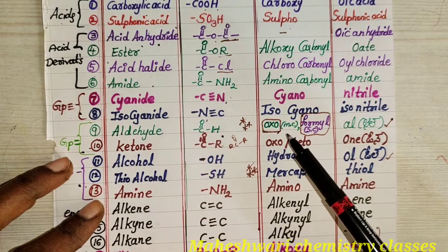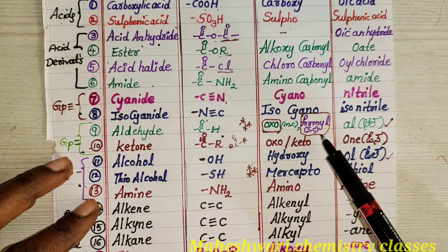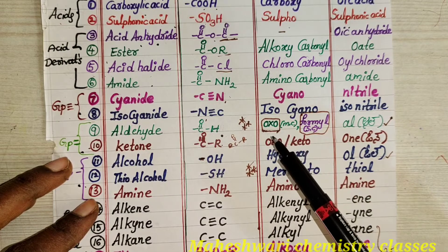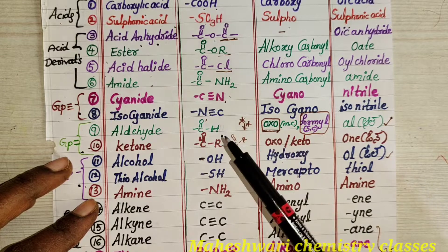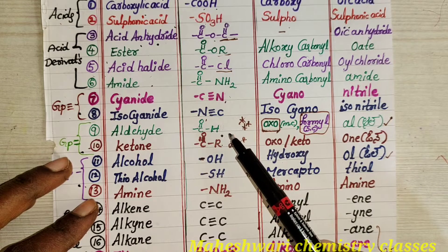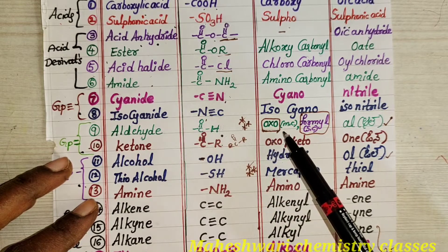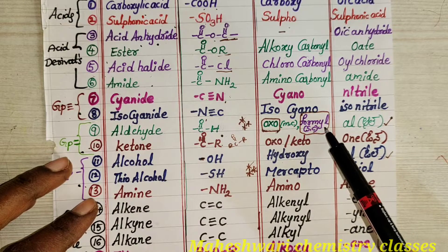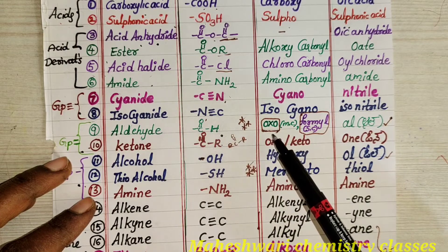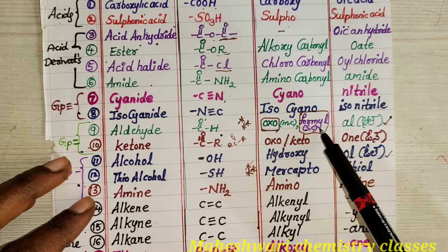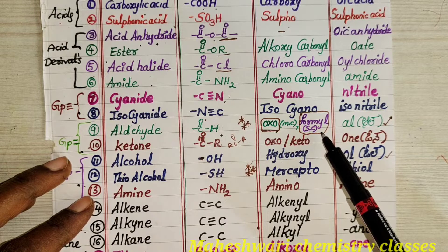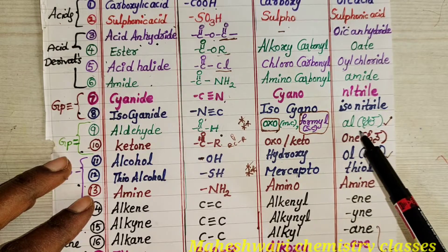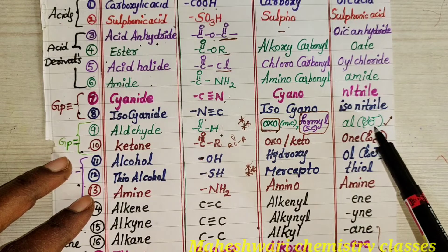For aldehyde: the prefix is sometimes AXO, sometimes formyl. When the aldehyde is in the main chain, the prefix is AXO. When it is in the side chain, it is called formyl. The suffix for aldehyde is al.